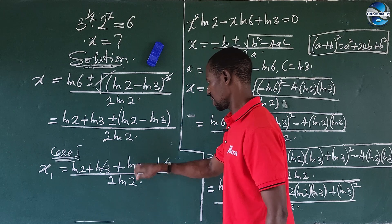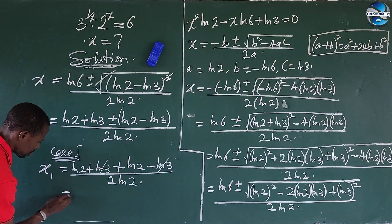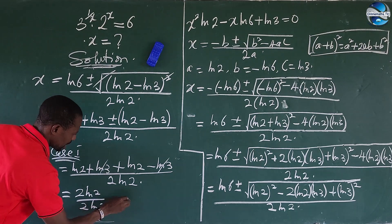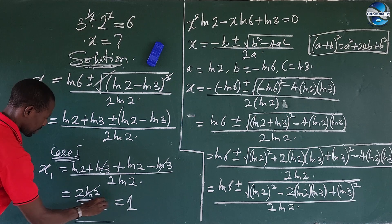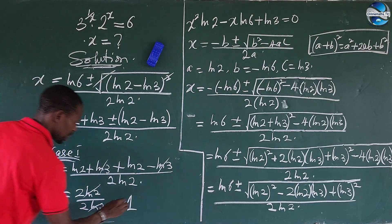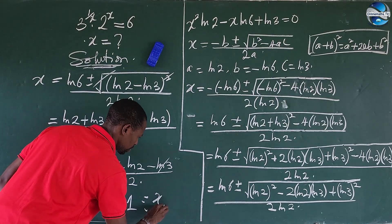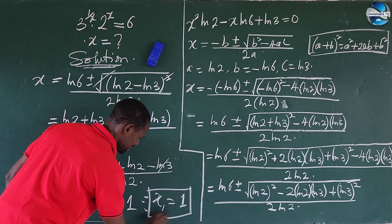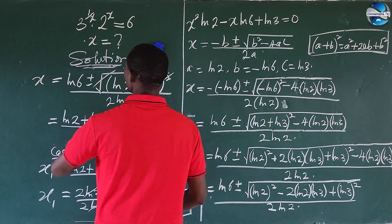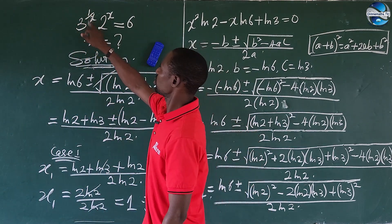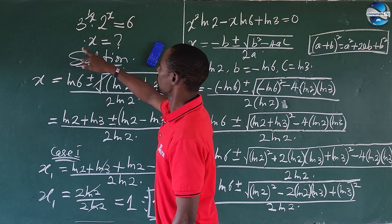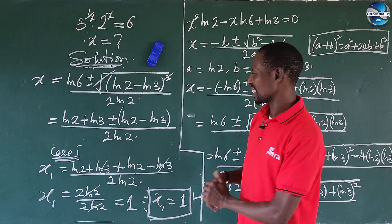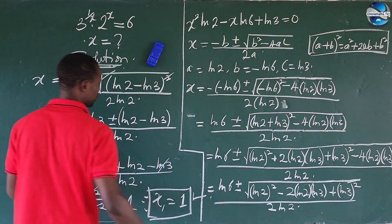For Case 1 with the positive sign: x₁ equals ln(2) plus ln(3) plus ln(2) minus ln(3), all over 2·ln(2). The ln(3) terms cancel, giving 2·ln(2) over 2·ln(2), which equals 1. So x₁ equals 1. Checking in the original equation: 3 to the power of 1 times 2 to the power of 1 equals 6. Confirmed.